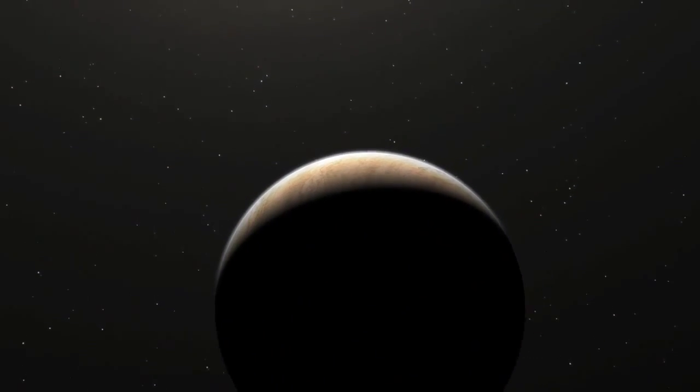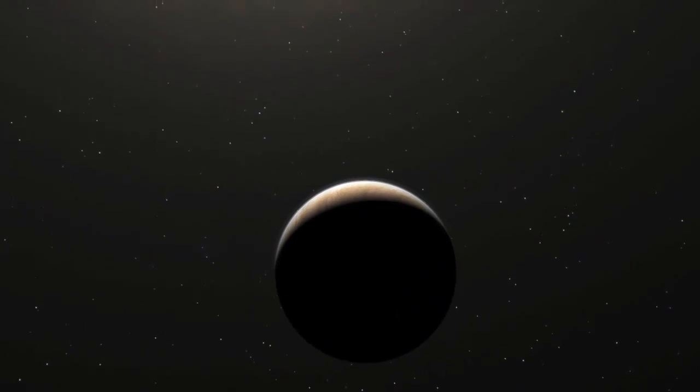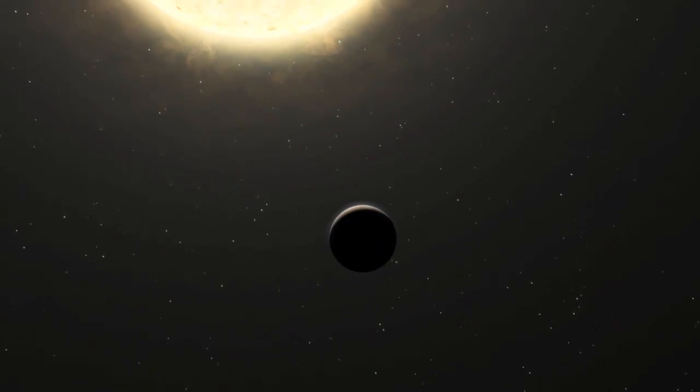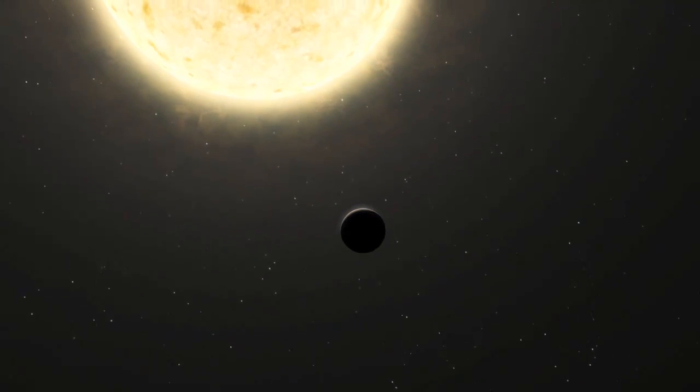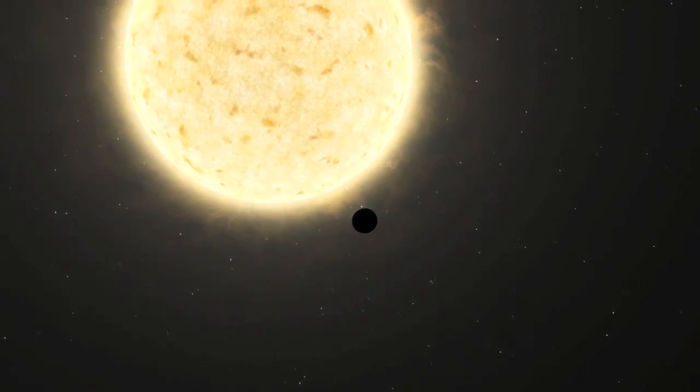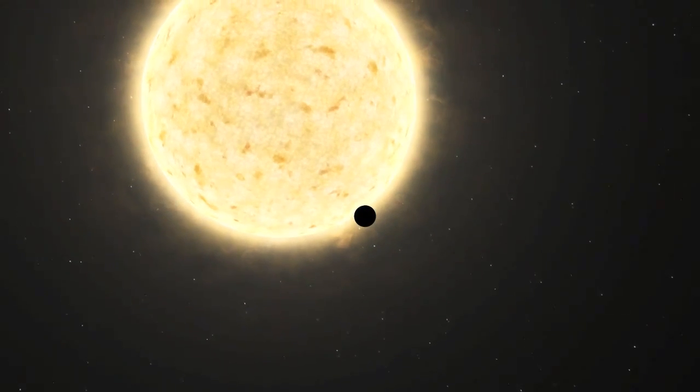The planet HIP-13044 b is also one of the few exoplanets known to have survived its host star massively growing in size after exhausting the hydrogen fuel supply in its core, i.e., the red giant phase of stellar evolution.